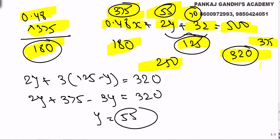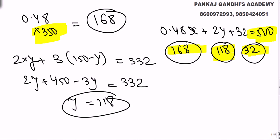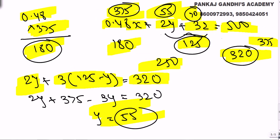With x = 375, we get 55 stamps of 2 rupees and 70 stamps of 3 rupees. But the question states that 2-rupee stamps are more than 3-rupee stamps, and here we are getting fewer. So x = 375 does not satisfy the condition. The correct answer is x = 350, y = 118, z = 32, where 2-rupee stamps (118) are more than 3-rupee stamps (32).